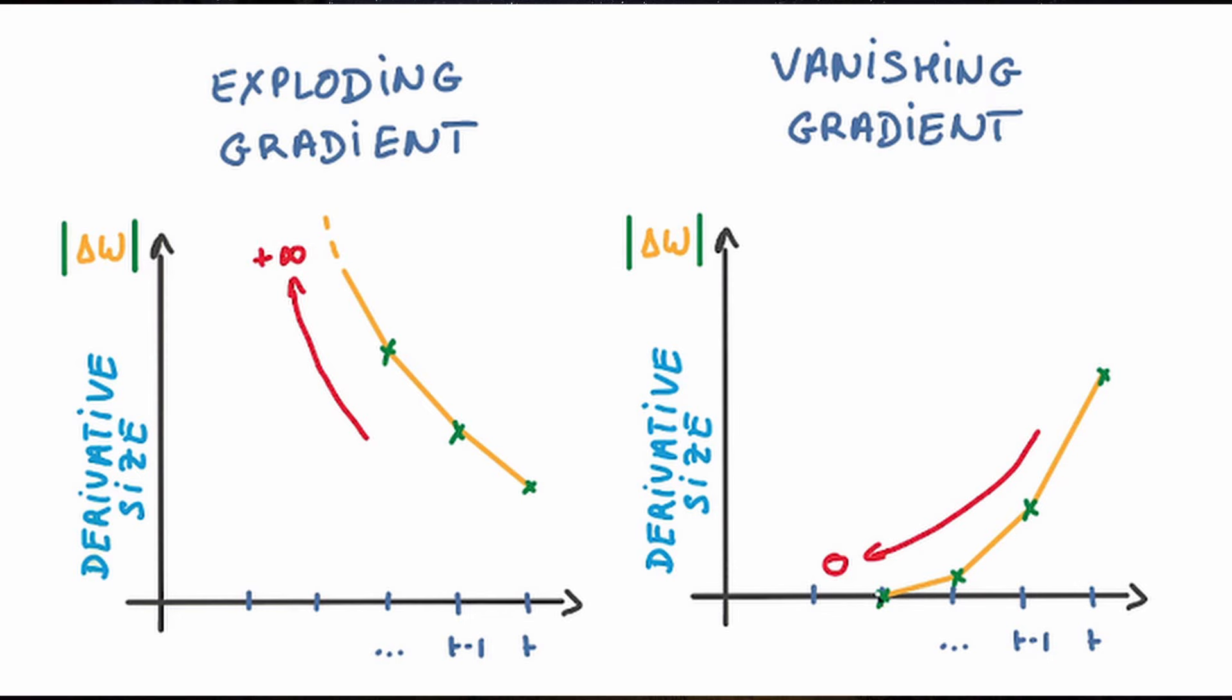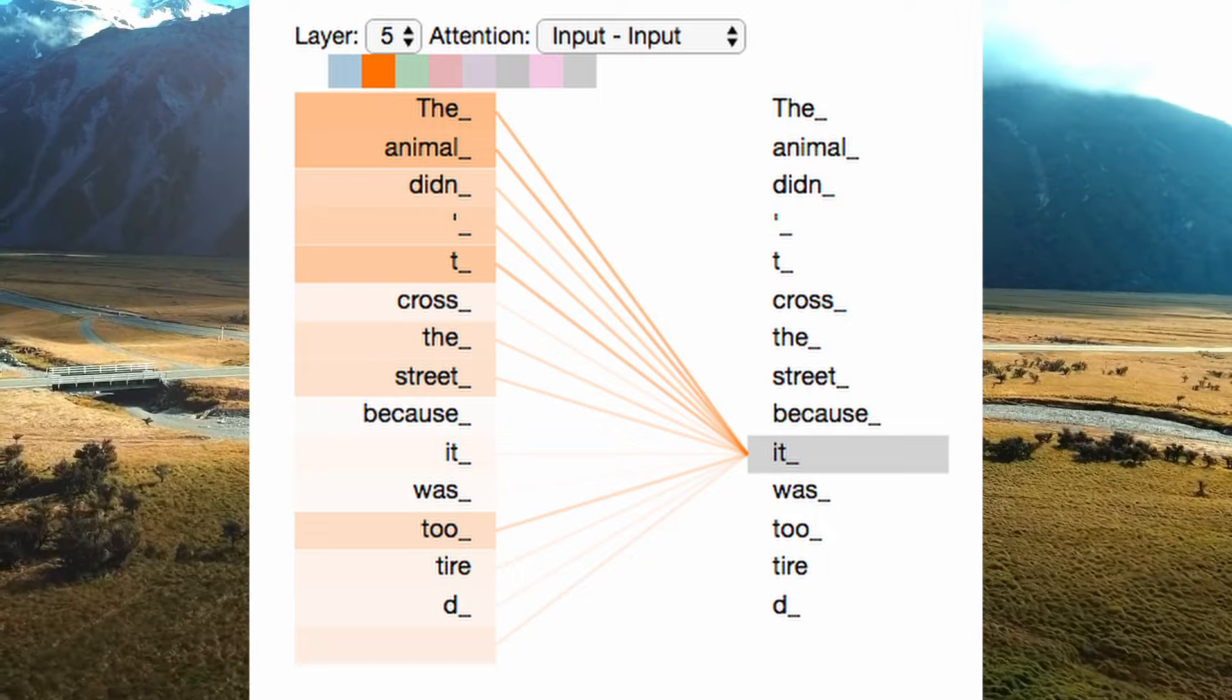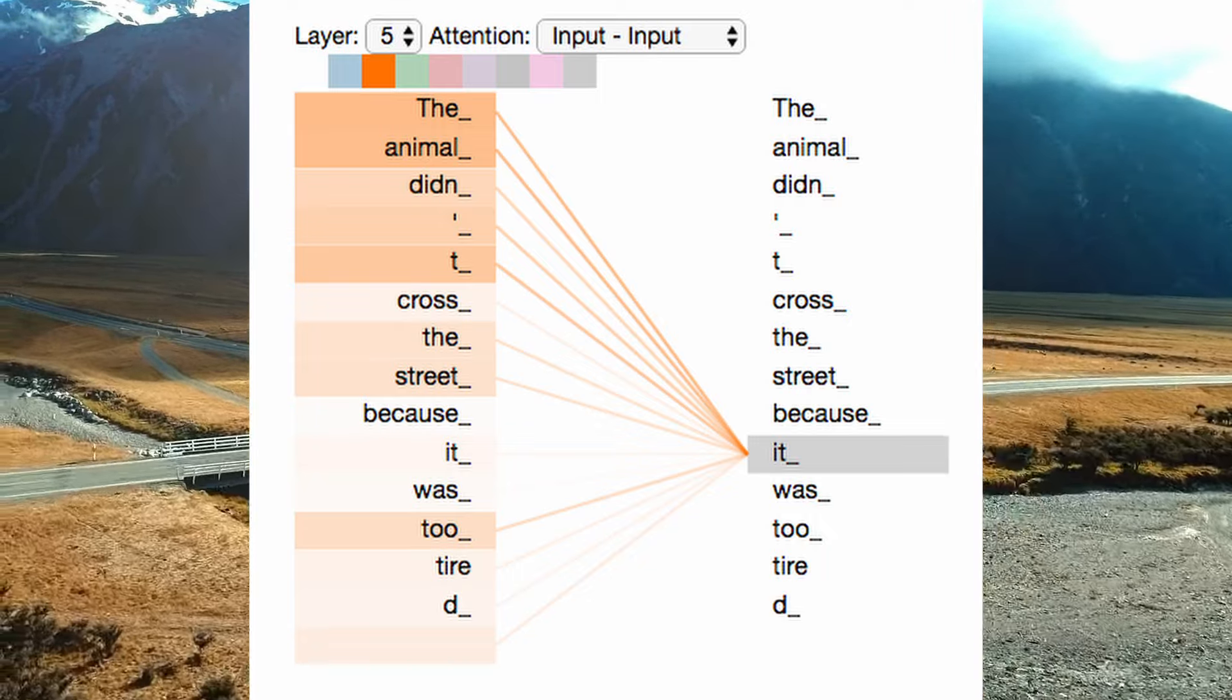Now, the direct connection between all tokens in the transformer ensures that there is no need to go through potentially many intermediate steps as with RNNs for the gradient to flow from one token's position to another. This architecture design allows for more direct gradient pathways during back propagation.